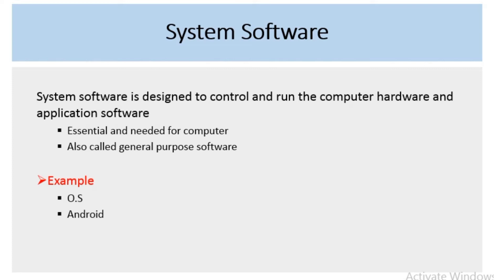When you install an application program, you also need system software. Without system software, you cannot run application software. This means system software is essential.